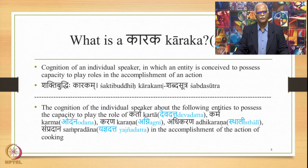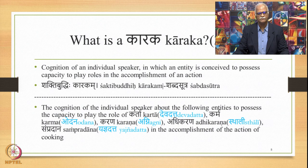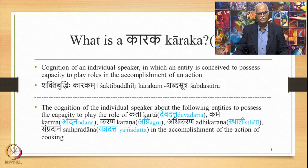The text called Shabda Sutra further improves this definition, bringing in the cognitive aspect, and says that the cognition of an individual speaker in which an entity is conceived to possess capacity to play roles in the accomplishment of an action is what is Karaka. Shakti Buddhi Hikarakam — this is the Sutra. This can be explained as follows: the cognition of the individual speaker about the following entities possessing the capacity to play the role of Karta in Devadatta, Karma in Odana, Karana in Agni, Adhikarana in Sthali and Sampradana in Yadnyadatta, in the accomplishment of the action of cooking. Therefore these roles that Devadatta, Odana etc. play are called Karakas. So Shakti Buddhi Hikarakam is the latest definition available to us.